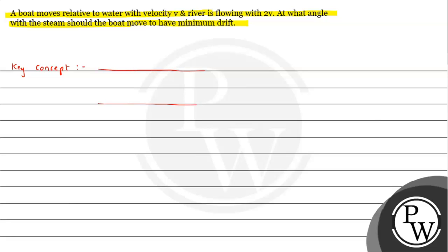Let's say we have a river bed — we can call it a river — and its width is given as d. From the situation, let's say a boatman tries to row his boat in this direction. This is the condition given as v_br, that is, the velocity of the boat with respect to the river.